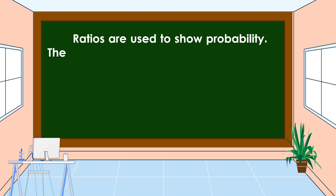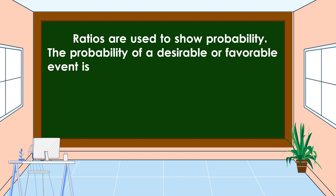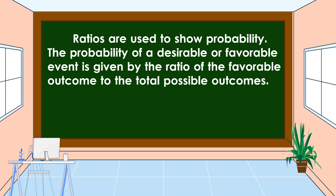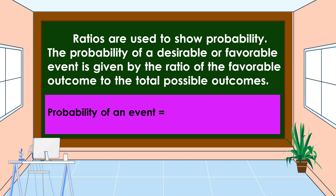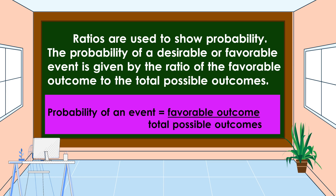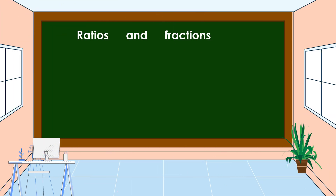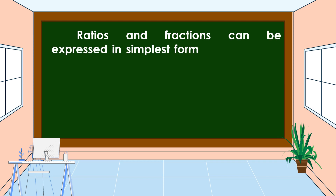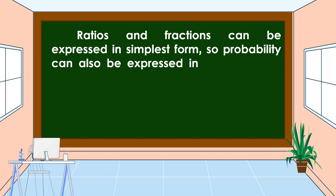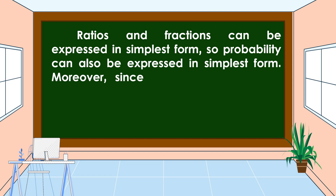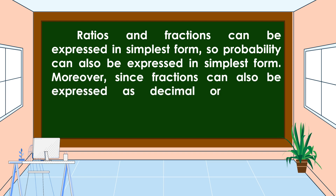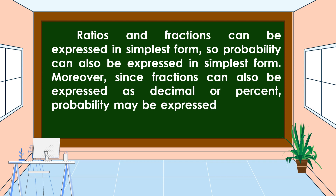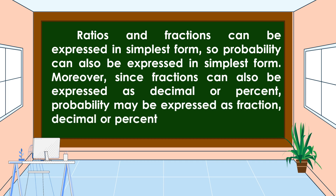Ratios are used to show probability. The probability of a desirable or favorable event is given by the ratio of the favorable outcome to the total possible outcomes. This is our formula: Probability of an event is equal to favorable outcome over total possible outcomes. Probability can also be expressed in simplest form. Since fractions can also be expressed as decimal or percent, probability may be expressed as fraction, decimal, or percent.